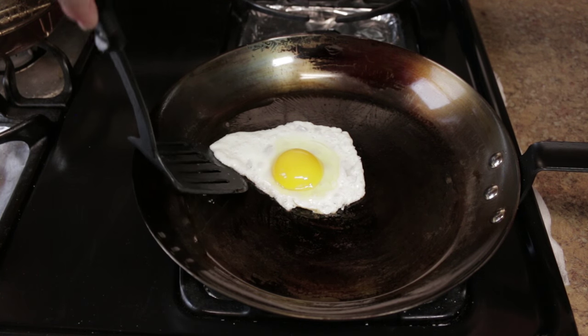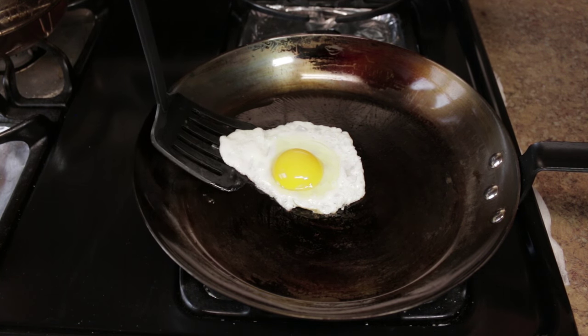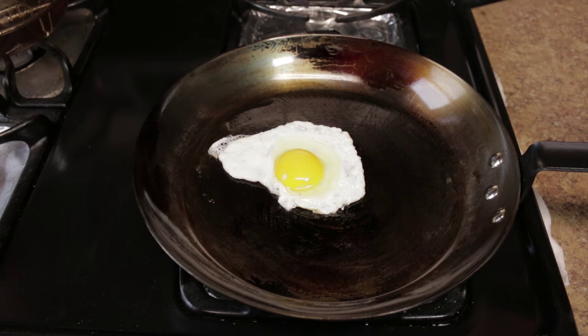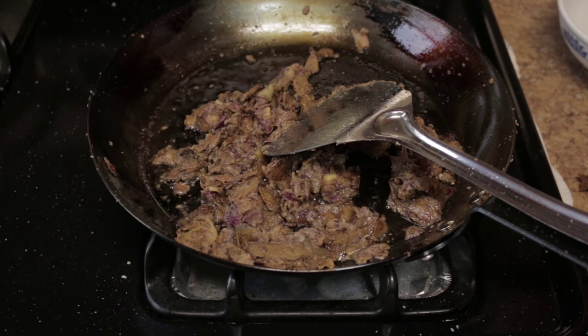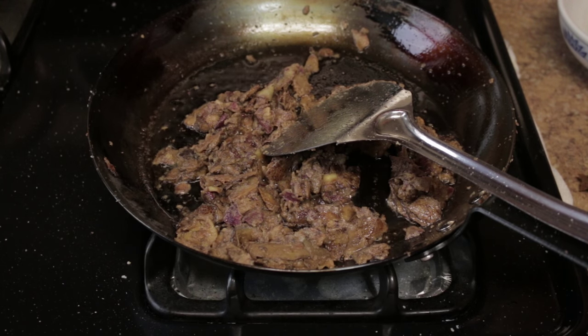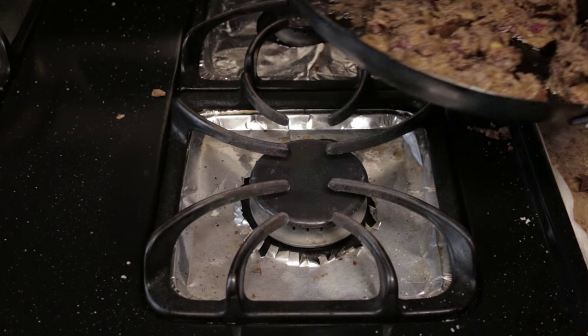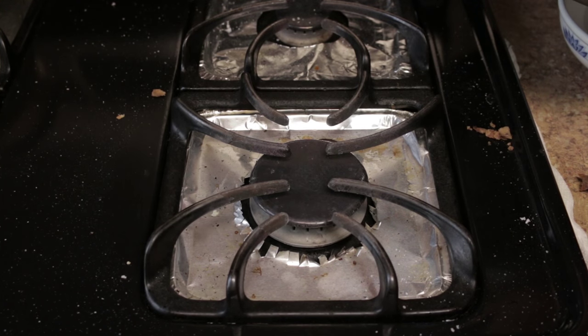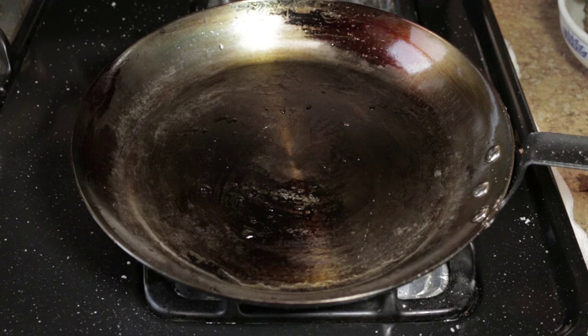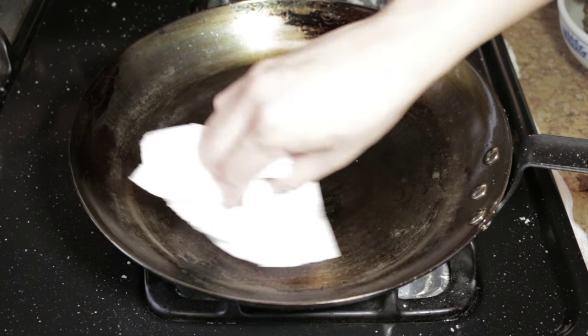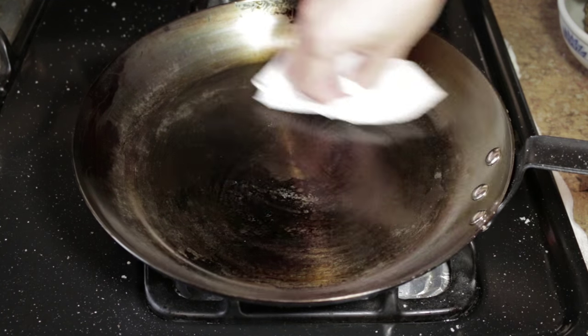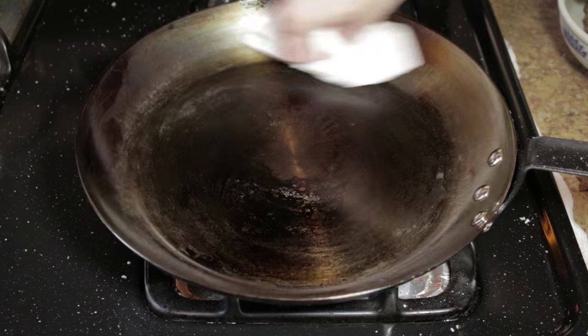So looking on the internet, I decided to go with the recommendation from America's Test Kitchen. They recommend to cook with potato skins, oil, and salt. As you can tell, this created a huge mess in my kitchen. With the process, it was able to produce a nice sheen. But you know what? It still did not work.